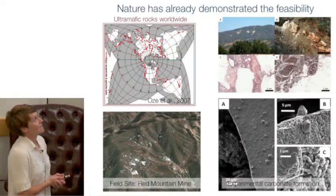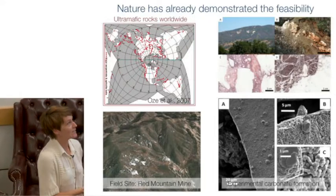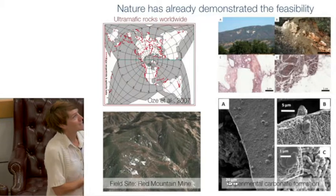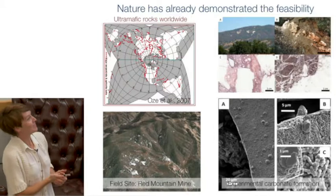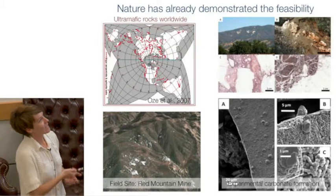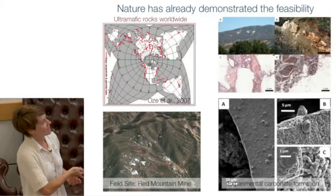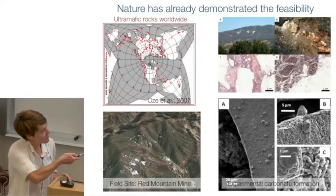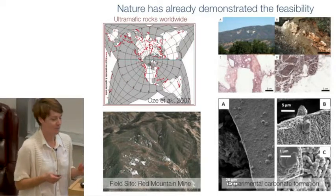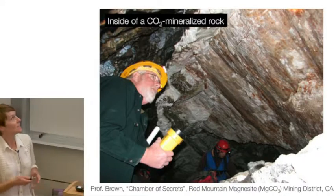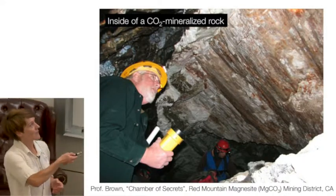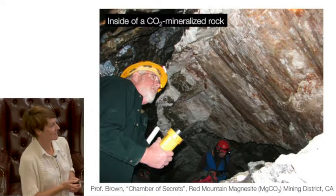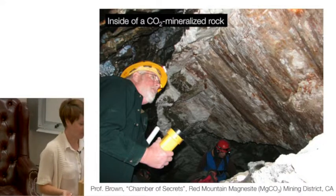Nature has actually figured out how to do mineral carbonation. We have a field site near Livermore, California, which is one of the largest magnesium carbonate deposits in the world. You can see the white carbonate veins sticking out of the mountain. We've been able to reproduce this experimentally — these are carbonate minerals forming on the surface of a magnesium carbonate mineral. We haven't figured out exactly how these large veins formed, but Professor Brown from the School of Earth Sciences is looking at one of these large veins underground in this amazing example of mineral carbonation.